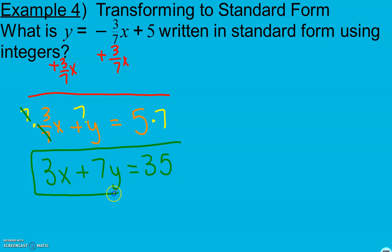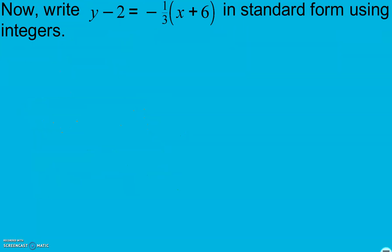Keep in mind if we would have moved our y to the right side and our 5 to the left side it would have been an equivalent equation. They just all would have been the opposite signs. So I would have ended up with negative 35 equals negative 3x minus 7y and that would have worked as well. Now I'll give this a try.